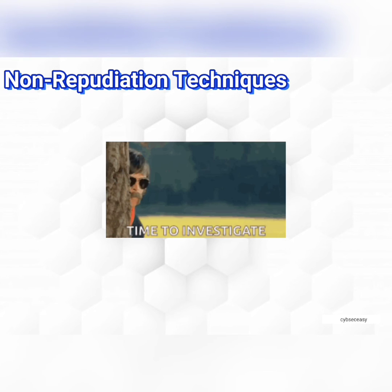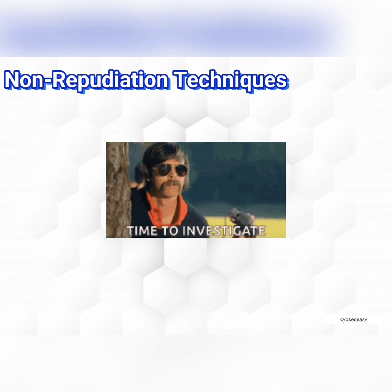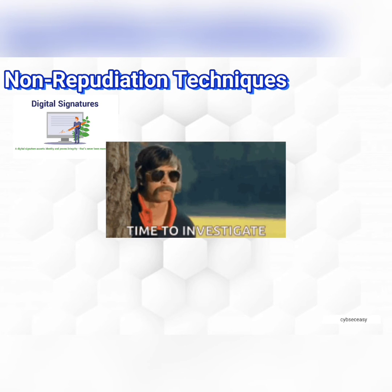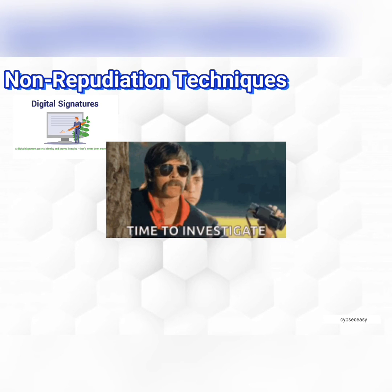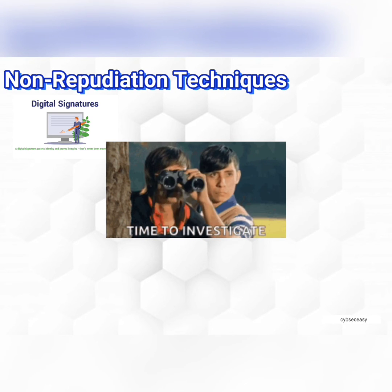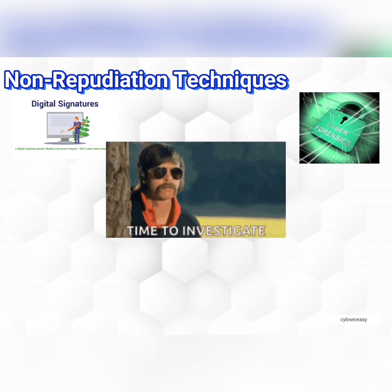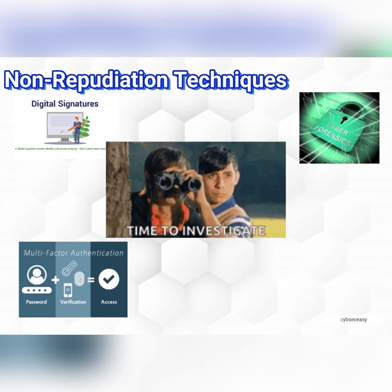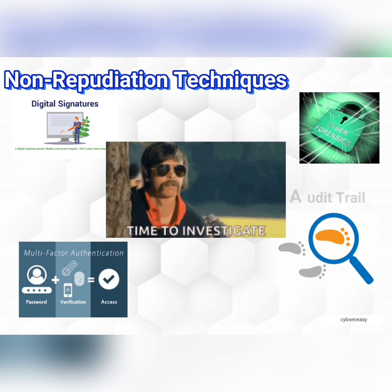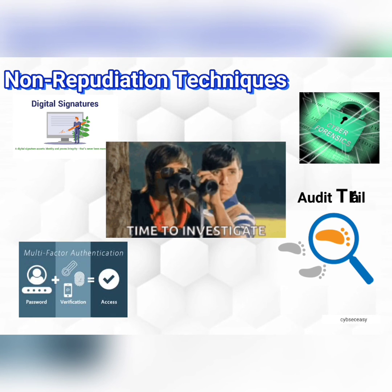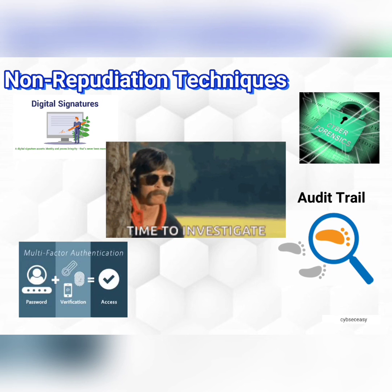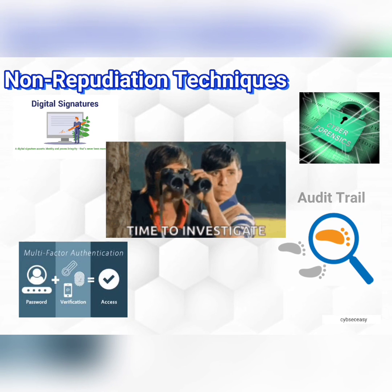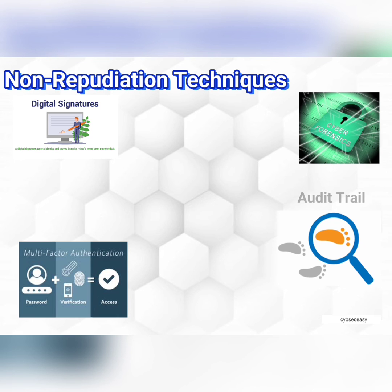Finally, let's see what are some techniques involved in non-repudiation. Digital signature, which validates the information of data being modified with deep cryptographic evaluation, whether it's done on a system or through some coding during transit. Authentication will help us to prove the identity. Cyber forensic analysis and audit trail will give you the complete picture of the incident and the timeline, which will help to validate the fact.